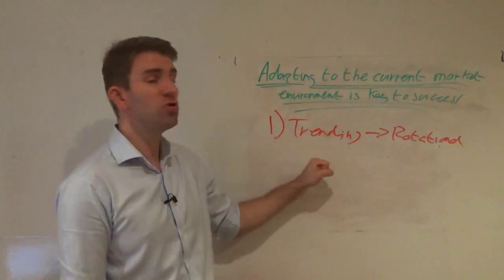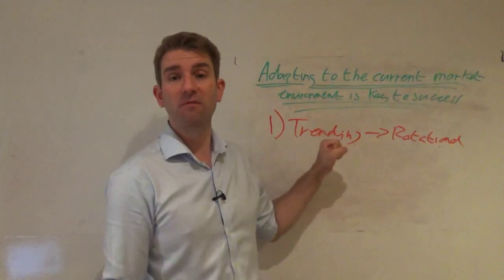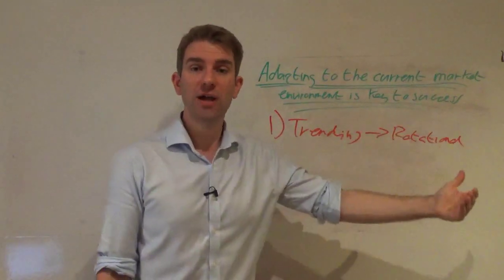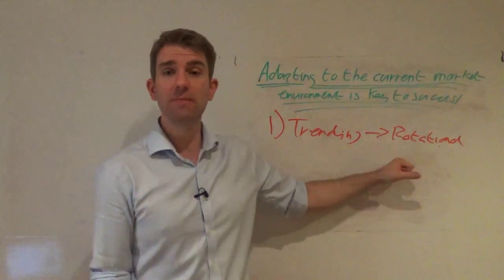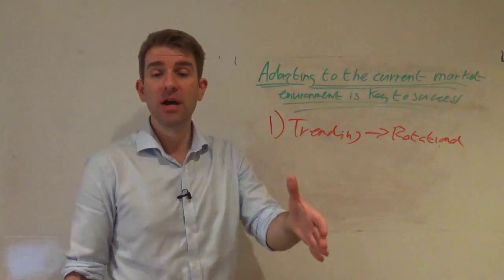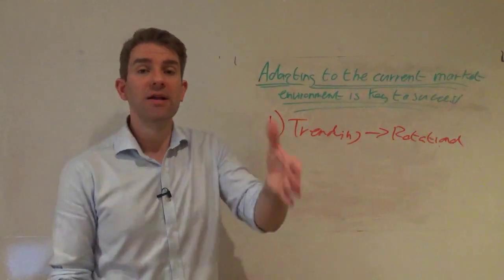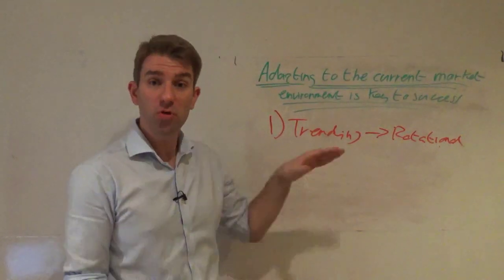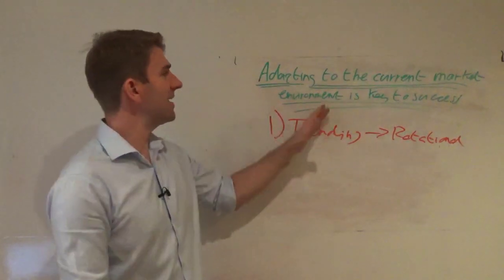If you know you're good at trading momentum explosions, trending, volatility expansion, go find something that's doing that. Switch to that. If you want to stay in the same market, then switch the strategy. If you like trading currency pairs and you want to carry on trading the euro, and it's gone from a rotational to a trending environment or aggressive environment, you need to switch strategies.